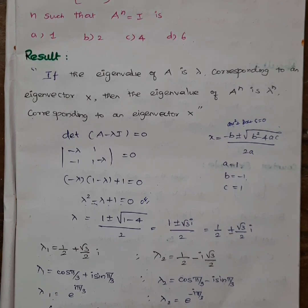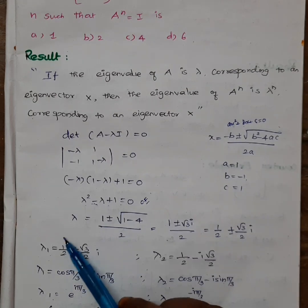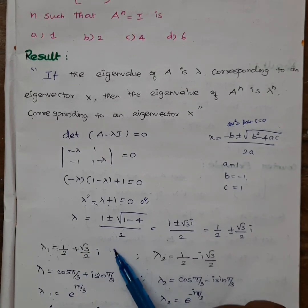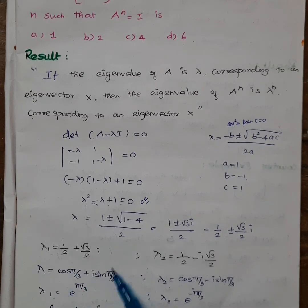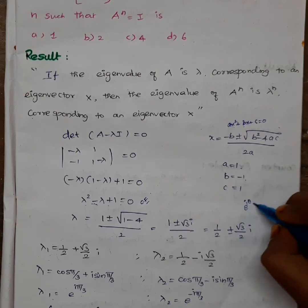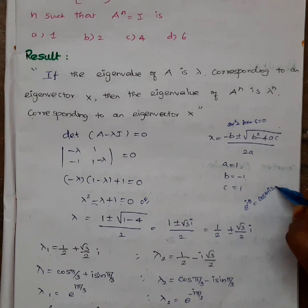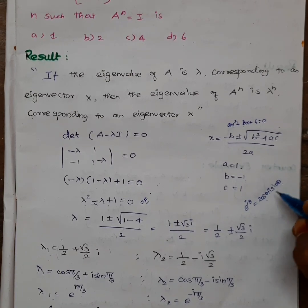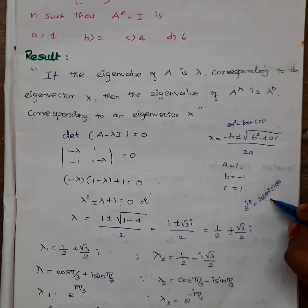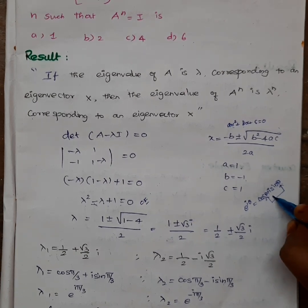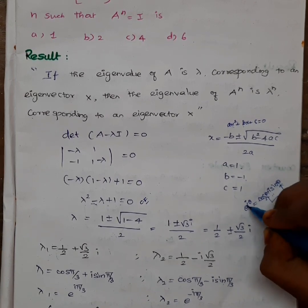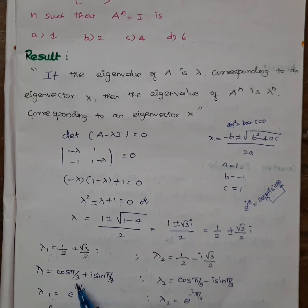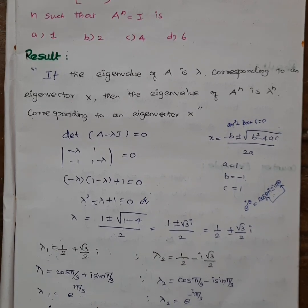Now for A^n, we look at lambda^n. We can write this in polar form as e^(iθ). That is cos(θ) plus i·sin(θ), with cos(π/3) and sin(π/3). So lambda equals e^(i·π/3) and e^(−i·π/3).